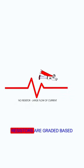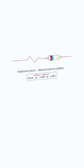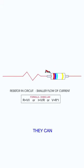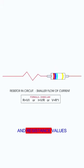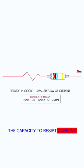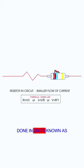Resistors are graded based on their power ratings — the amount of power they can handle without exploding — and resistance values, the capacity to resist current. The measurement is done in units known as ohms.